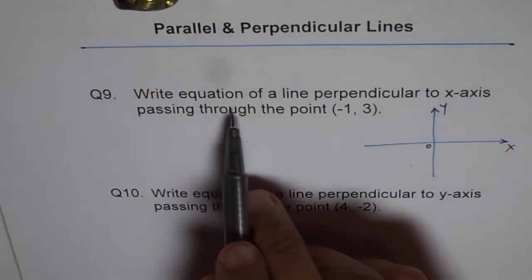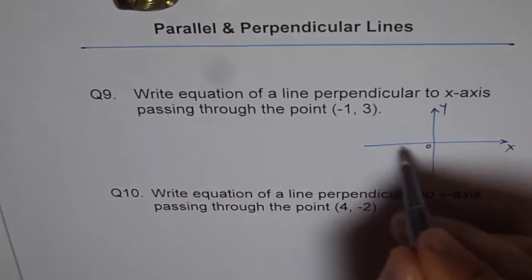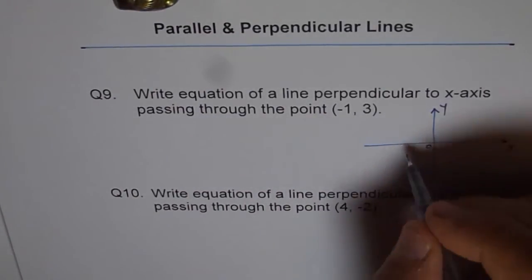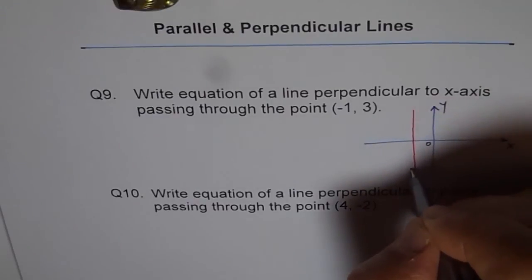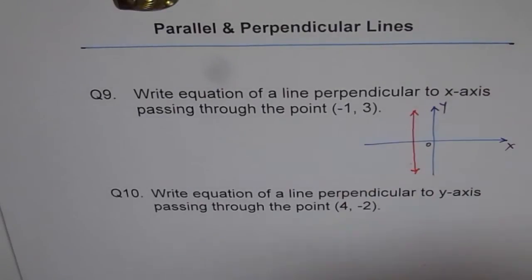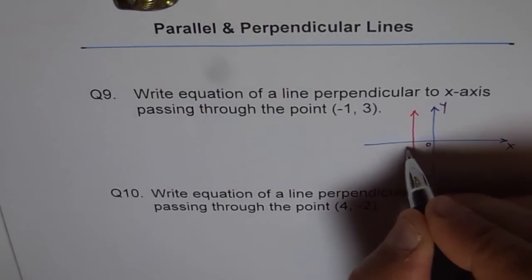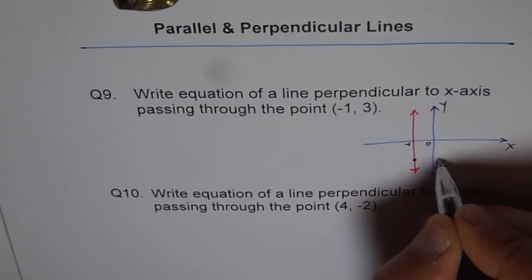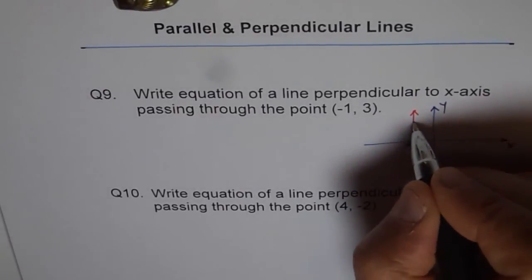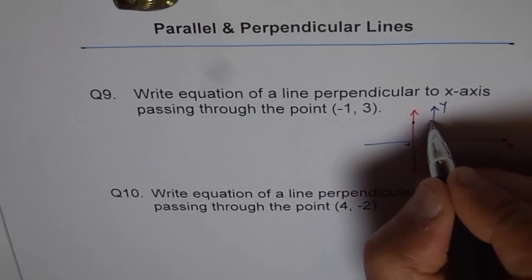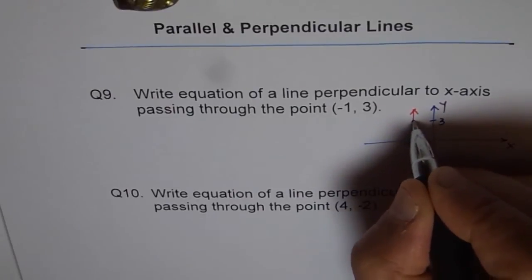Now we have to draw equation line perpendicular to x-axis. This is my x-axis. Perpendicular to x-axis will mean it is kind of like this - a vertical line, right? So that line has to be a vertical line and it goes through point (-1, 3). 3 is positive, right? So this is the point (-1, 3).